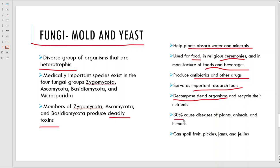About 30% of these fungi cause diseases in plants, animals, and humans - like the black mold that grows in houses when they get wet and stay wet and warm. These guys can cause fruit, pickles, jams, jellies, and bread to go moldy. Everybody has seen the green mold grown on bread. So these guys are getting around.